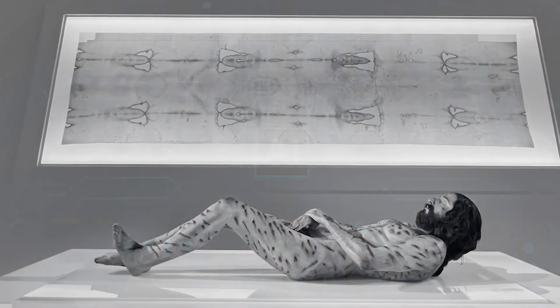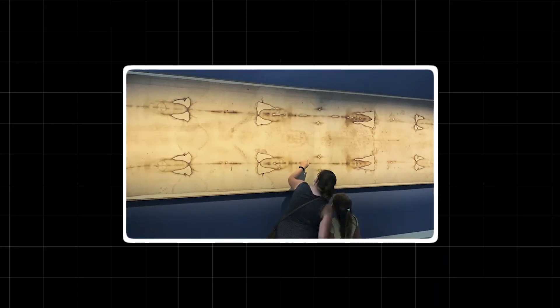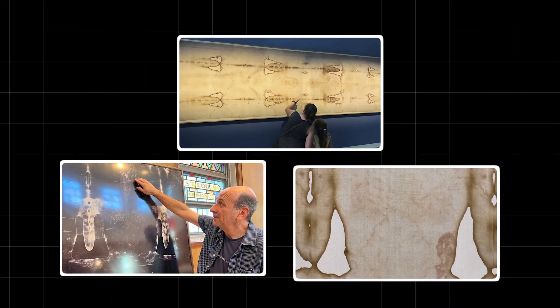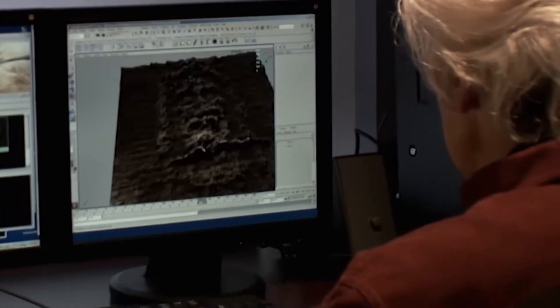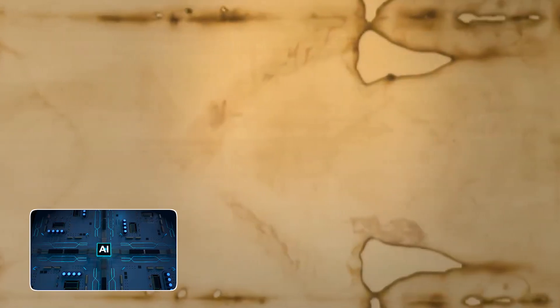This single finding, verified by the AI, debunks every single artistic or forgery theory. No forger could paint, stain, or scorch a cloth around pre-existing bloodstains, and have it line up perfectly with a 3D photographic negative image. The AI has proven that something happened. But what? Was it a lost technology? A natural phenomenon we've never seen? Or something else?